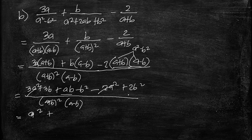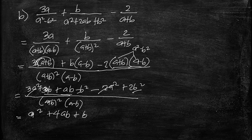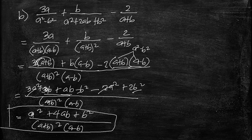We have 3ab terms to combine. So we get 4a squared, and combining gives us 4ab. When we subtract, the result is plus b squared over (a plus b) squared (a minus b). That is the final result for letter B.